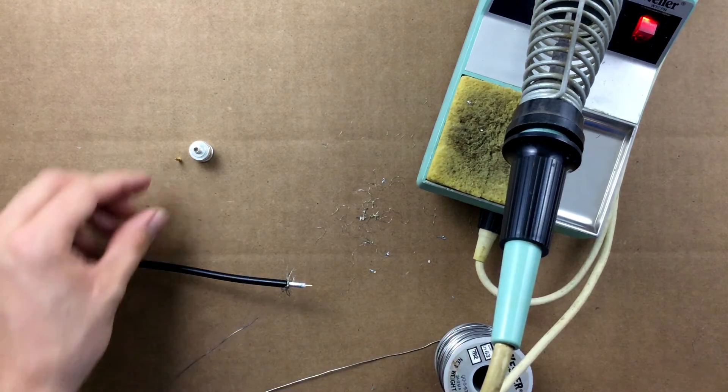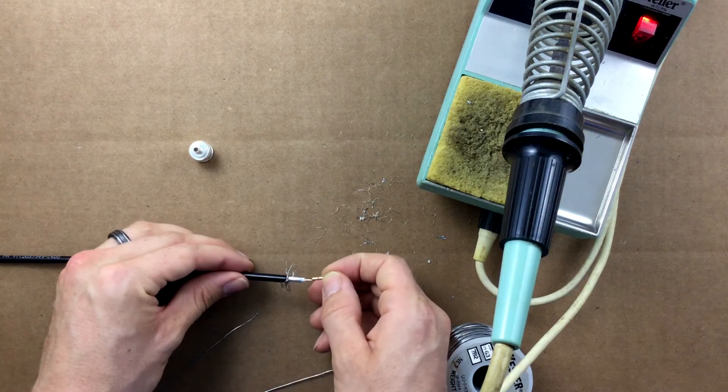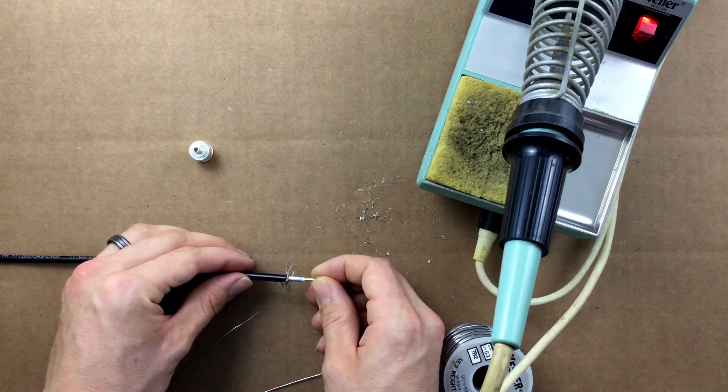Place the center pin of the connector onto the center conductor of the coax. Make sure you have a safe place to solder.